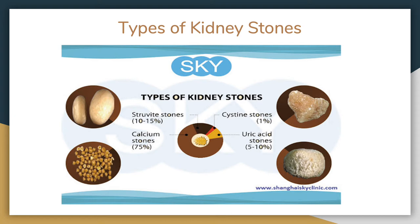Struvite stones are associated with urinary tract infections. They grow rapidly and increase in size. Uric acid stones' most common risk factor is low urine pH. These stones form when too much fluid is lost, for example with chronic diarrhea, malabsorption, or severe dehydration. Cystine stones are a result of cystinuria, a genetic disorder. It causes the kidneys to secrete too much of the amino acid cystine.